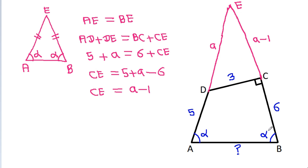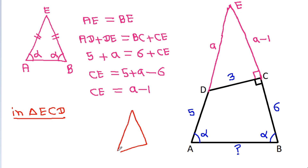Since angle BCD is 90 degrees, this angle DCE will also be 90 degrees. So in triangle ECD, the angle at C is 90 degrees. CD is 3, DE is A, and CE is A minus 1.